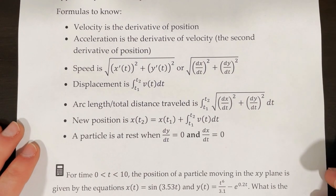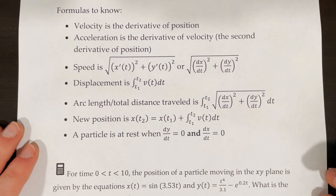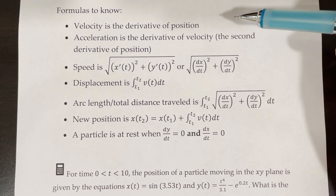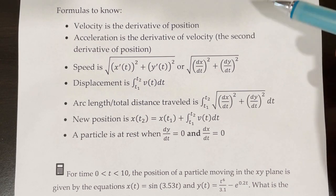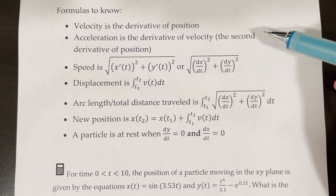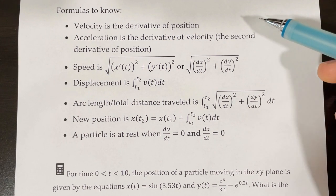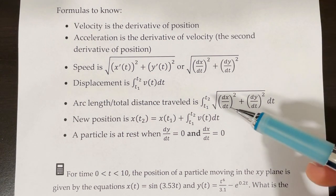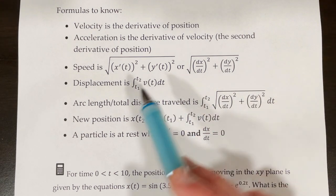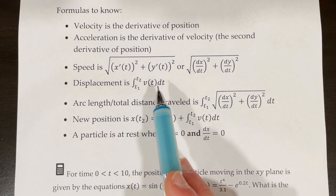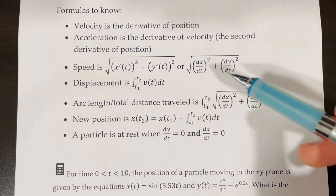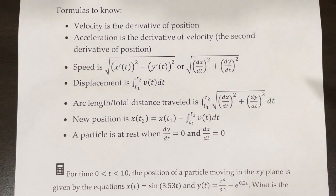Here are the important formulas to know. Velocity is the derivative of position and acceleration is the derivative of velocity, also known as the second derivative of position. The speed of a particle at any time t can be represented by the square root of x prime of t squared plus y prime of t squared, or we can write those as dx/dt and dy/dt.